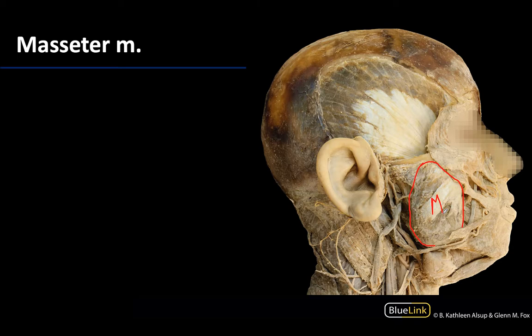We are looking at the superficial part of the muscle. It is a very large, very thick muscle, with all kinds of different fibers going in different directions. This muscle is often described as quadrangular.